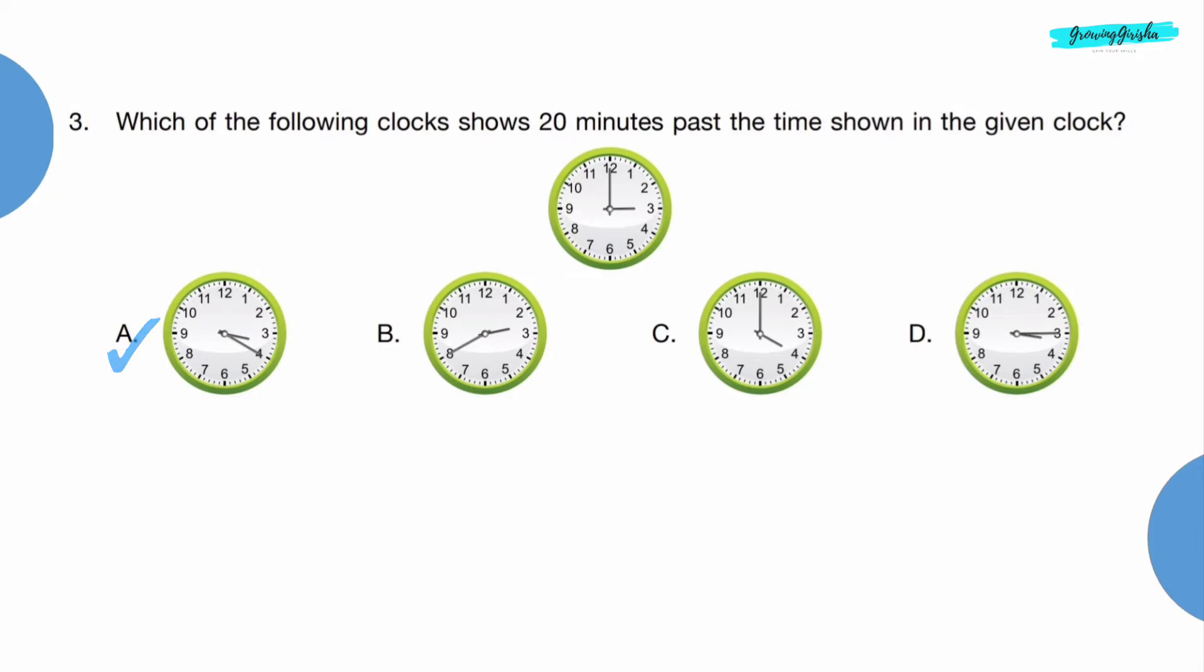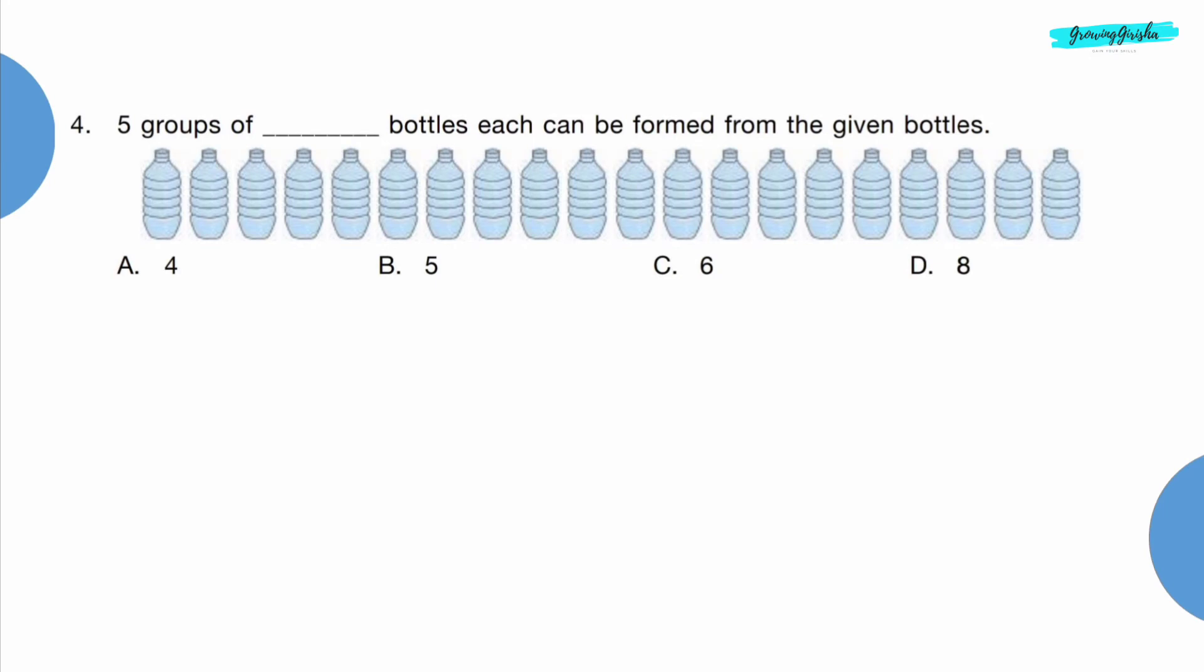Time shown in the clock is 3 o'clock, and 20 minutes past 3 o'clock is 3:20. So option A is the correct answer. Question 4: 5 groups of dash bottles each can be formed from the given bottles.